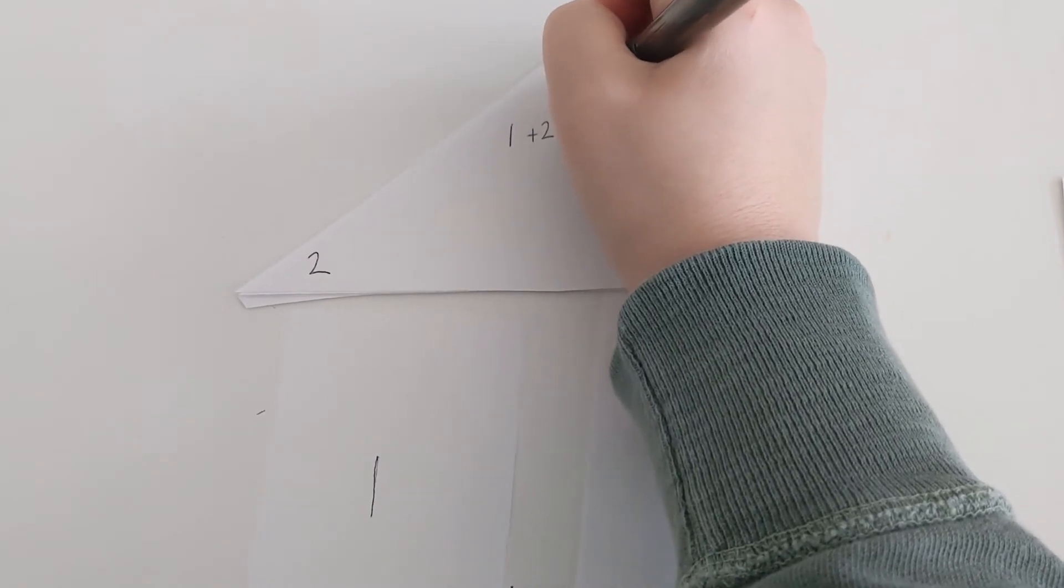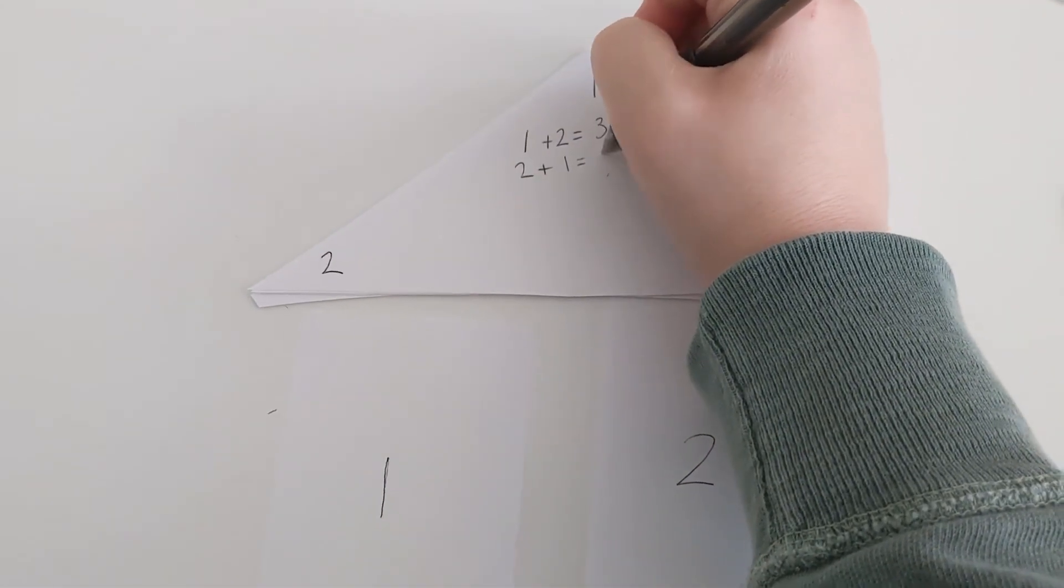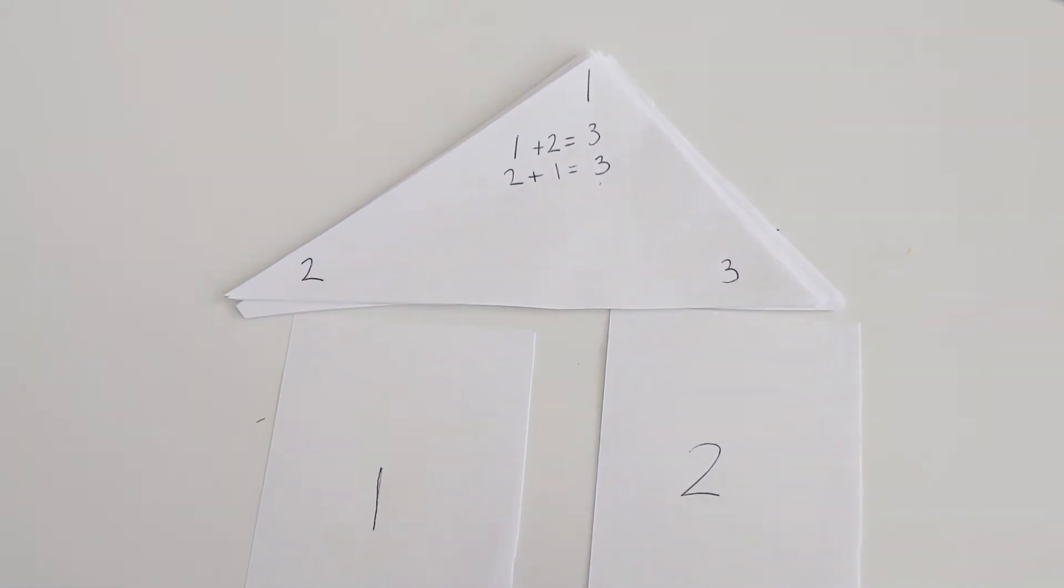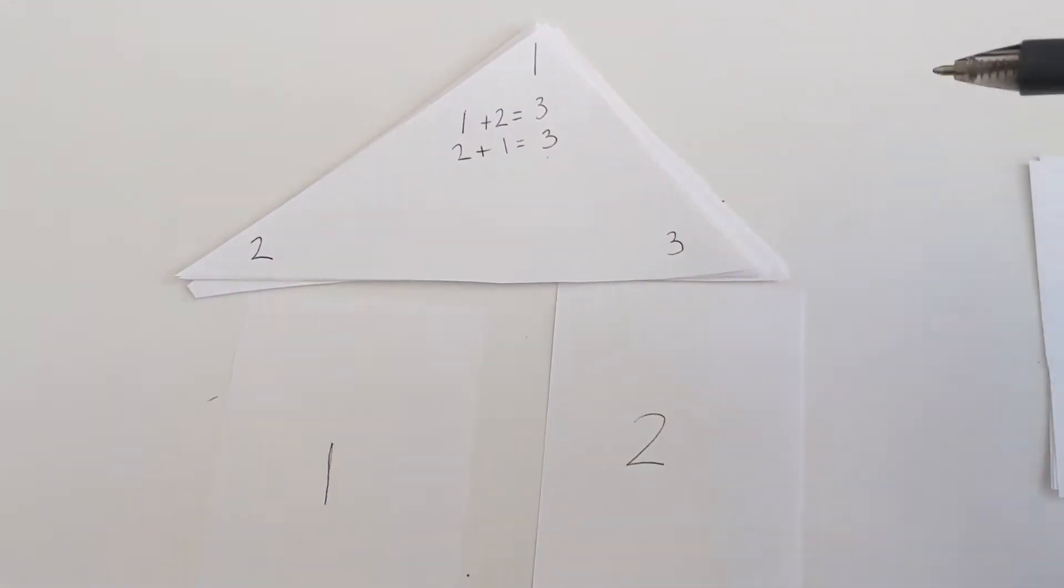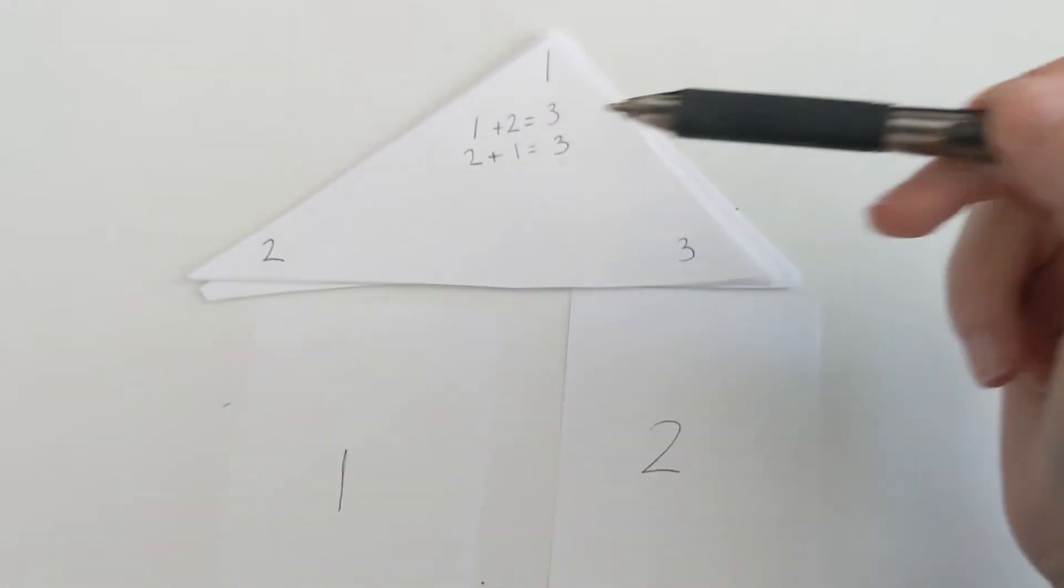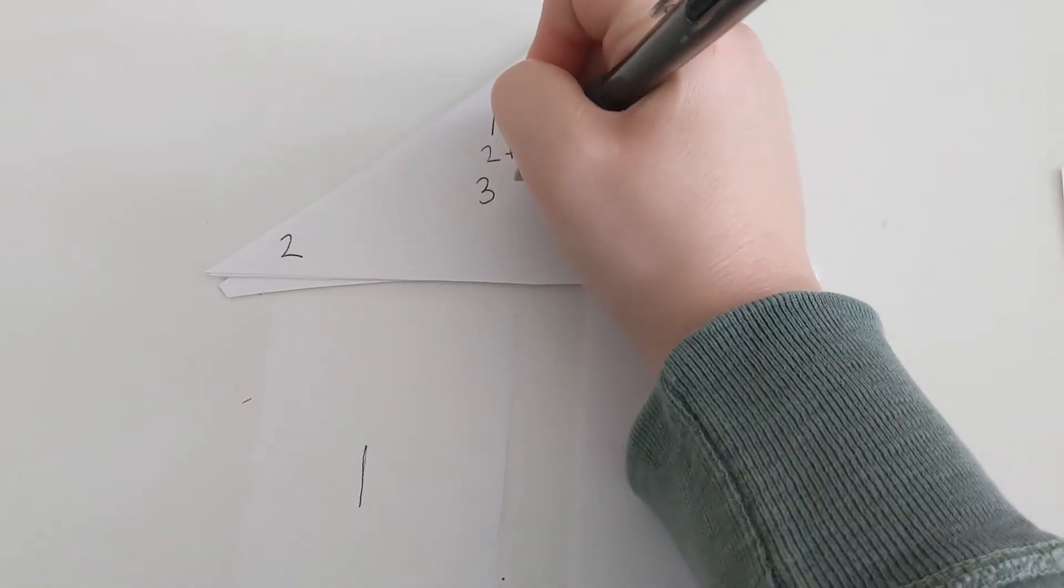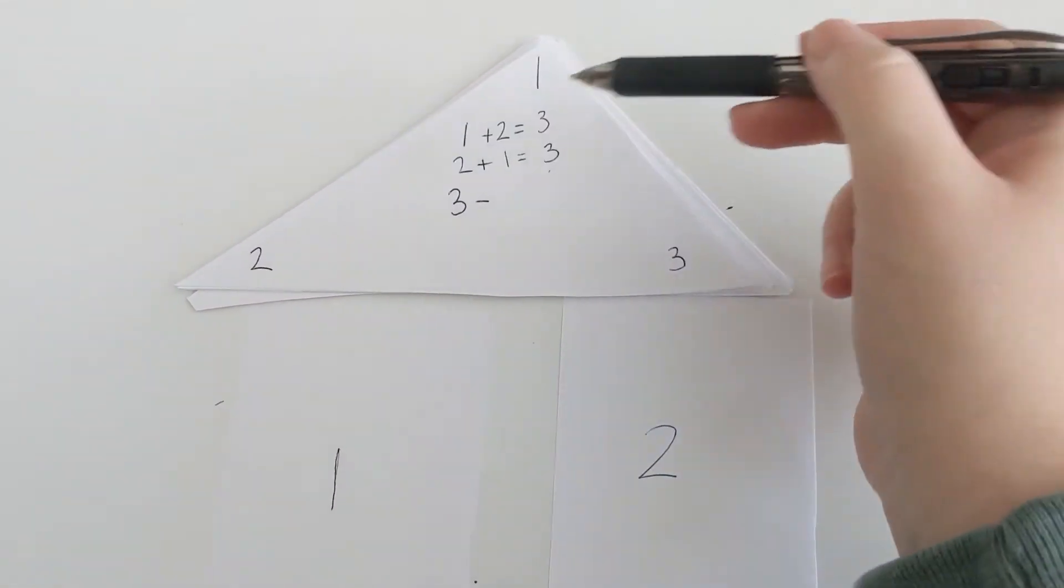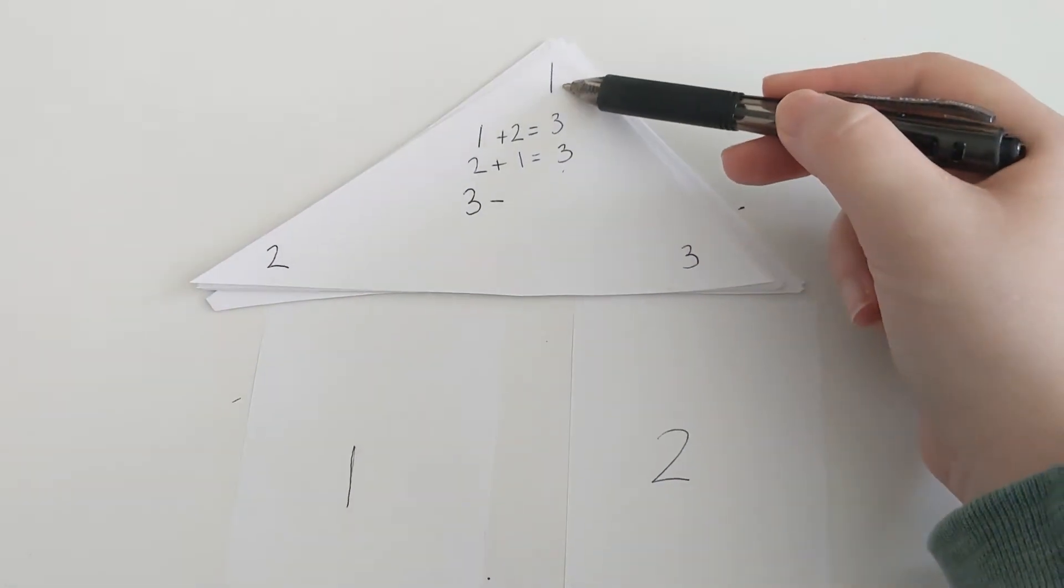One plus two. Well, we're all pretty good. So we can figure out what number is missing is our three. So my three goes in the corner. Now, if we want to get tricky, we can do subtraction with this. We talked about in subtraction, the biggest number always has to be the first number in our problem. Our biggest number is three. So three, I'm going to do a subtraction sign. Three minus, well, I can pick any one of these two numbers. I can do three minus two, and guess what? That's going to equal one.